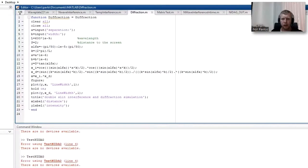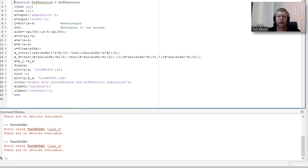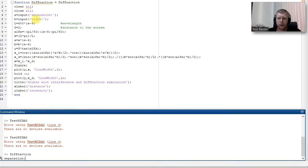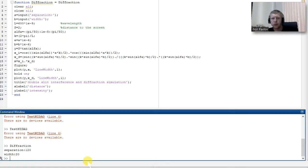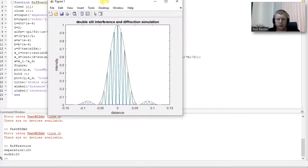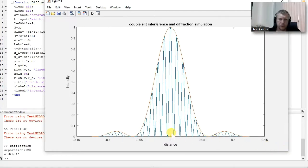As you remember during the lectures, I was showing the MATLAB simulation program which allows us to simulate the diffraction on two slits. Here we can check our result. I will not comment this program since we already did it during the lecture. It asks me the separation between two slits, which I am entering 120 microns, and the slit width is 20 microns. Here we have the result of our calculation which is exactly what we were expecting.